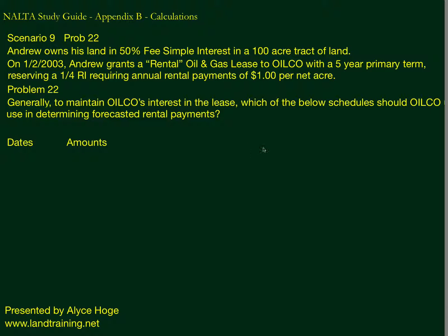Let's look at Scenario 9, Problem 2. Andrew owns his land in a 50% fee simple interest — so Andrew owns a 50% mineral interest in a 100-acre tract of land. On January 2nd, 2003, Andrew grants an oil and gas lease to Oilco with a five-year primary term, reserving a one-quarter royalty interest, and requiring annual delay rental payments of one dollar per net acre.